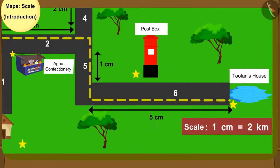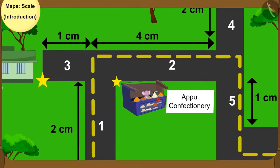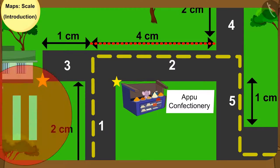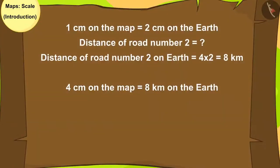Now can you tell the distance of road number 2 using the scale on the map? You can find the answer by pausing the video. Kids, your answer is absolutely correct. The distance of road number 2 is 8 km.